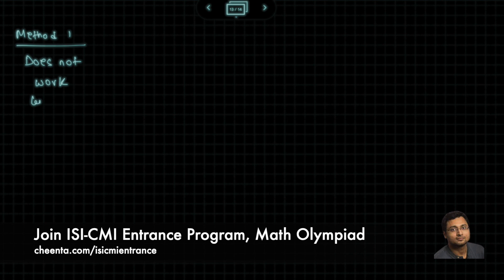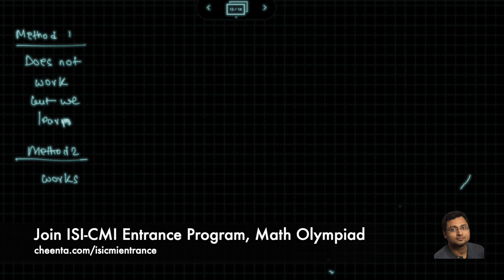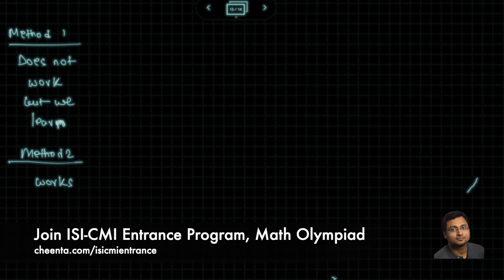But we learn something from Method One. And Method Two works, and we get the answer. It's often the case with problems like this that there are a variety of approaches, and maybe you don't get an answer from an approach but you still learn something.